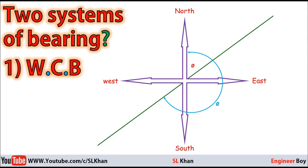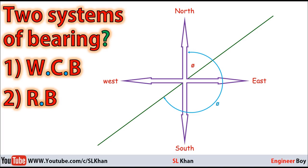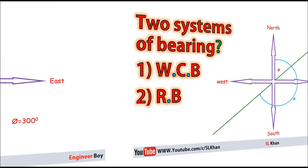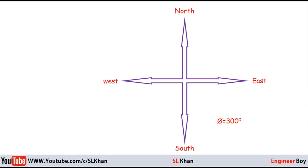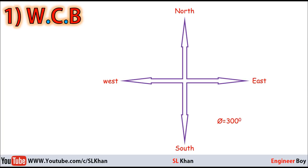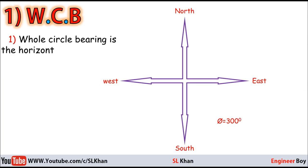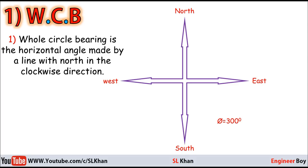The bearing can be clockwise or anticlockwise, so we need a system to handle this. There are only two bearing systems: one is the Whole Circle Bearing system, and the other is the Reduced Bearing system. Let's learn about the Whole Circle Bearing system first.